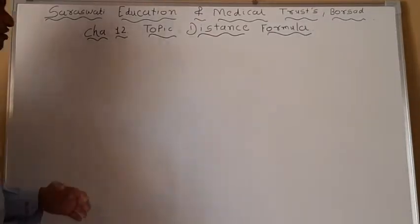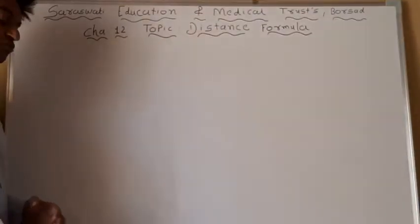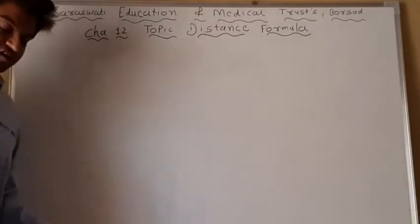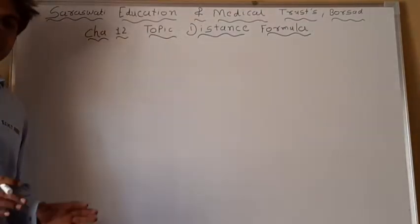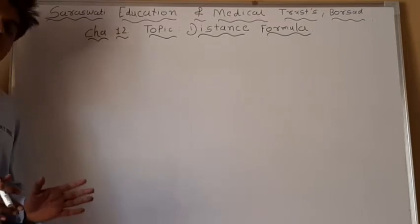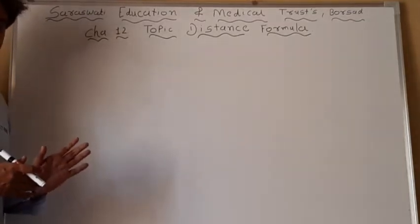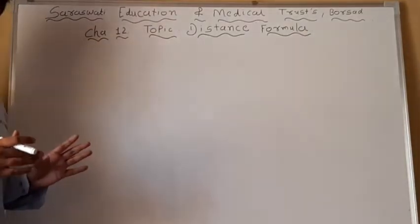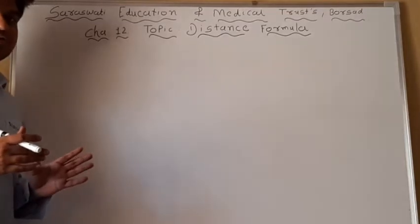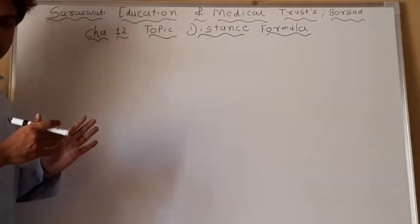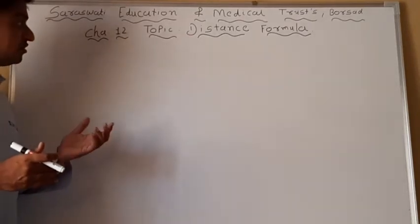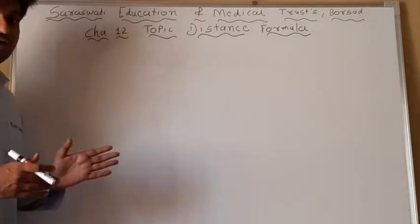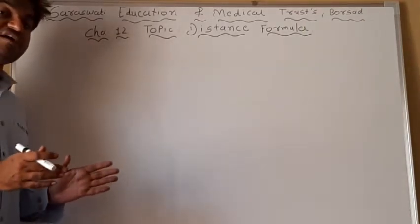Good morning students. Today we are going to discuss a new chapter: introduction to three-dimensional geometry. In standard 10th coordinate geometry, there is a related chapter with the distance formula, but that uses two axes and two coordinates. Now here three axes are present because the name of this chapter is three-dimensional geometry — that means three axes: X axis, Y axis, and Z axis.